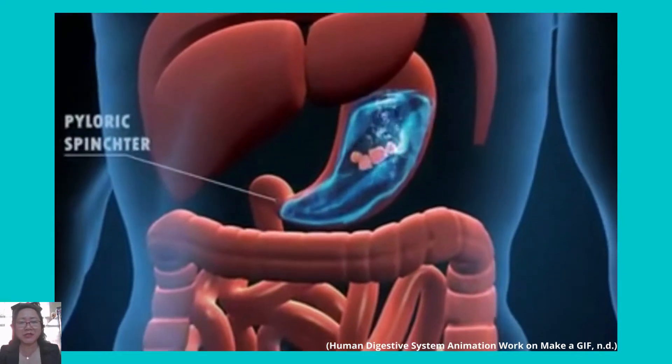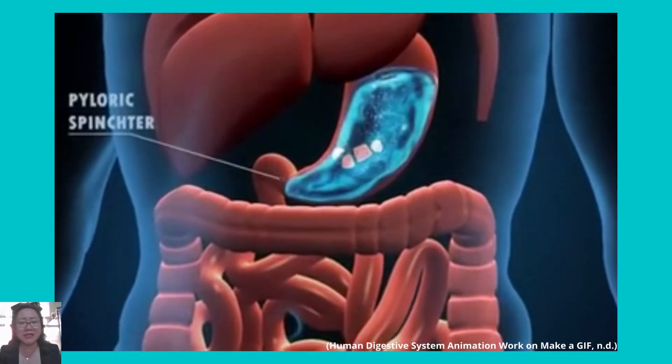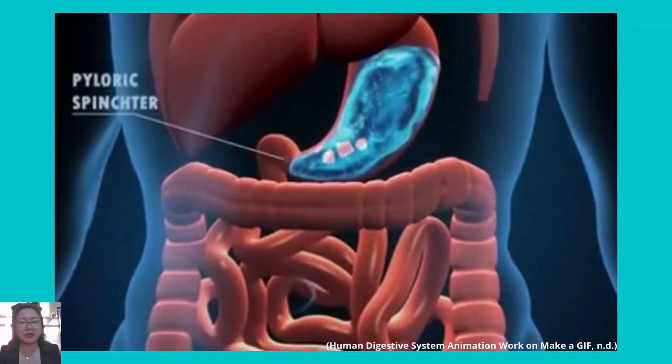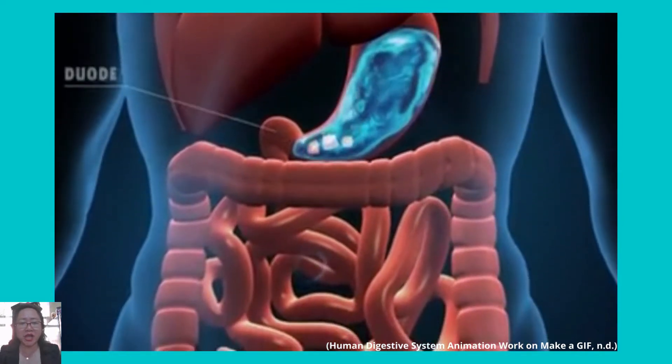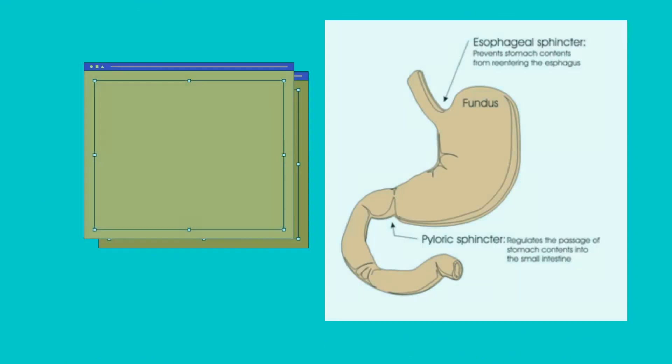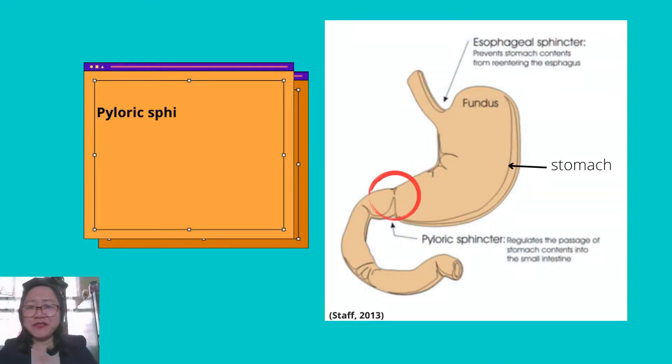The stomach produces digestive enzymes that break down food, now called chyme, into pieces. At the lower end of the stomach, you can see the pyloric sphincter.